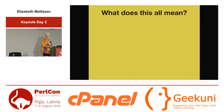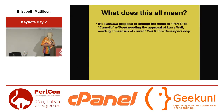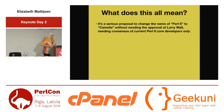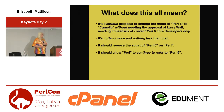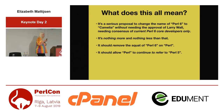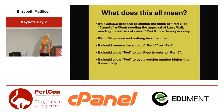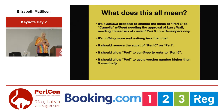So what does this all mean? It is a serious proposal to change the name of Perl 6 to Camelia without needing the approval of Larry Wall — needing consensus only of the current Perl 6 core developers. It should remove the squat of Perl 6 on Perl. It should allow Perl to continue to refer to Perl 5, like it is in fact. If you look at the program of this conference, there's only one presentation that has 'Perl 5' in the title — all the others with just 'Perl' mean Perl 5.